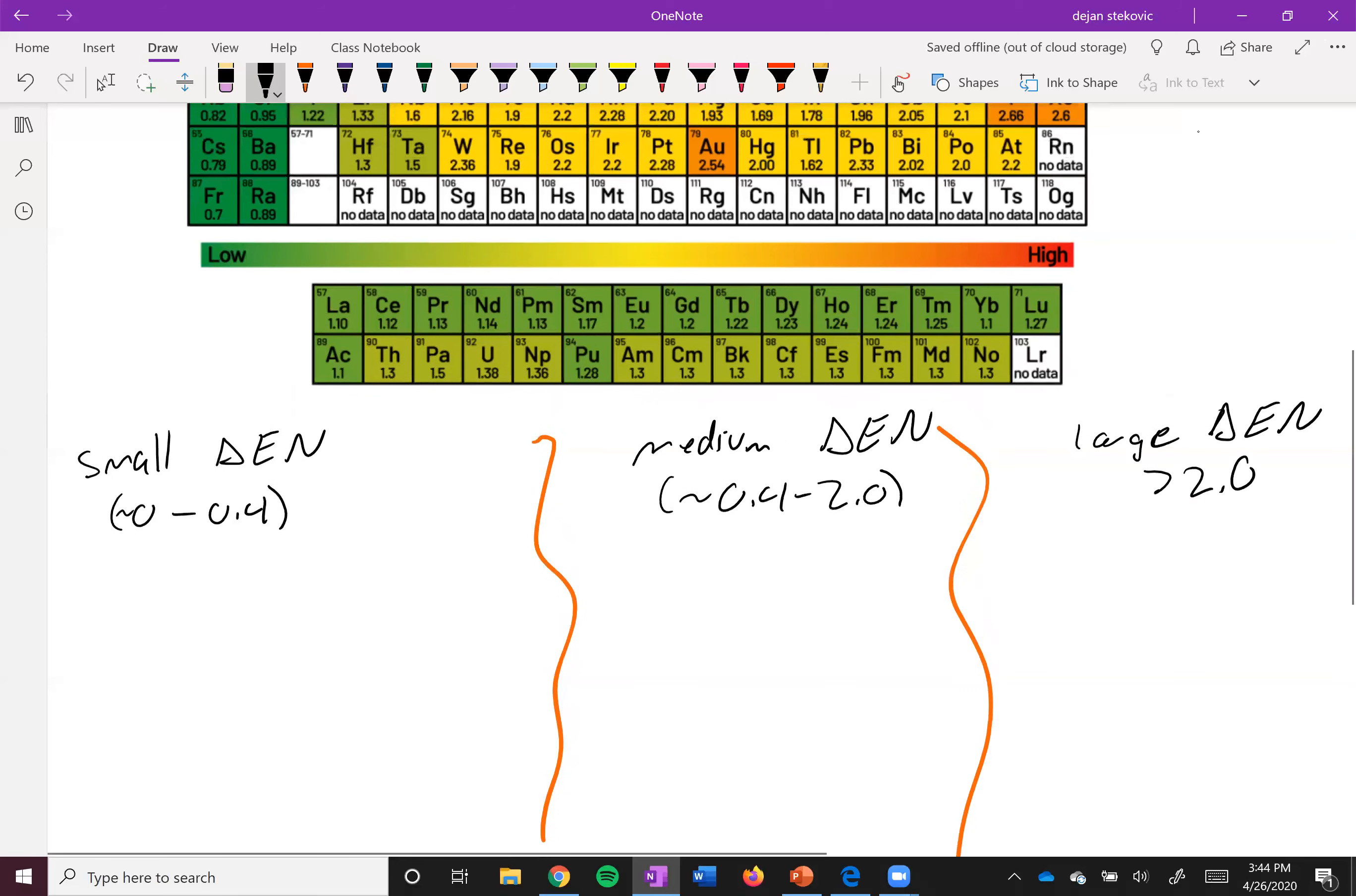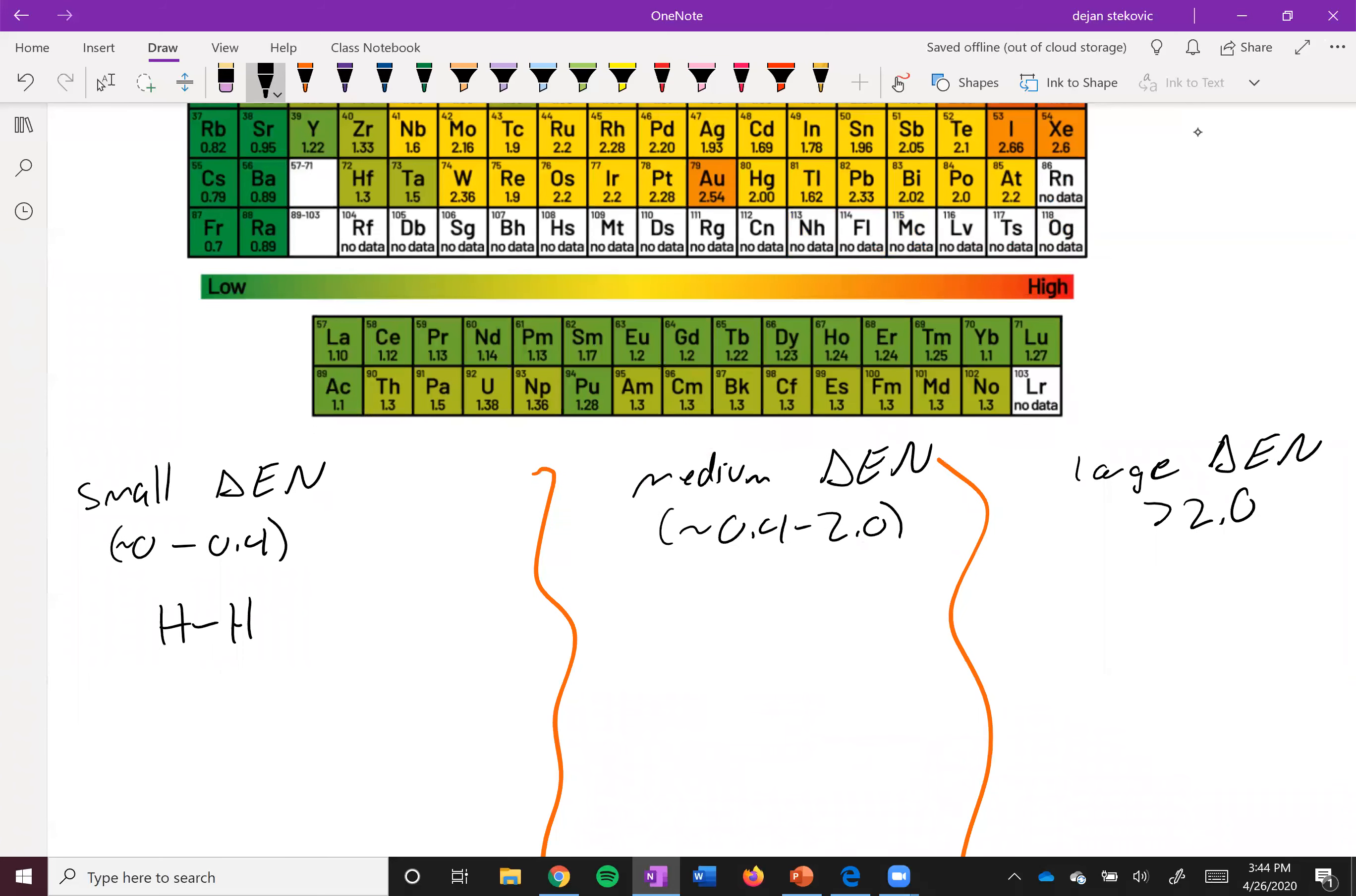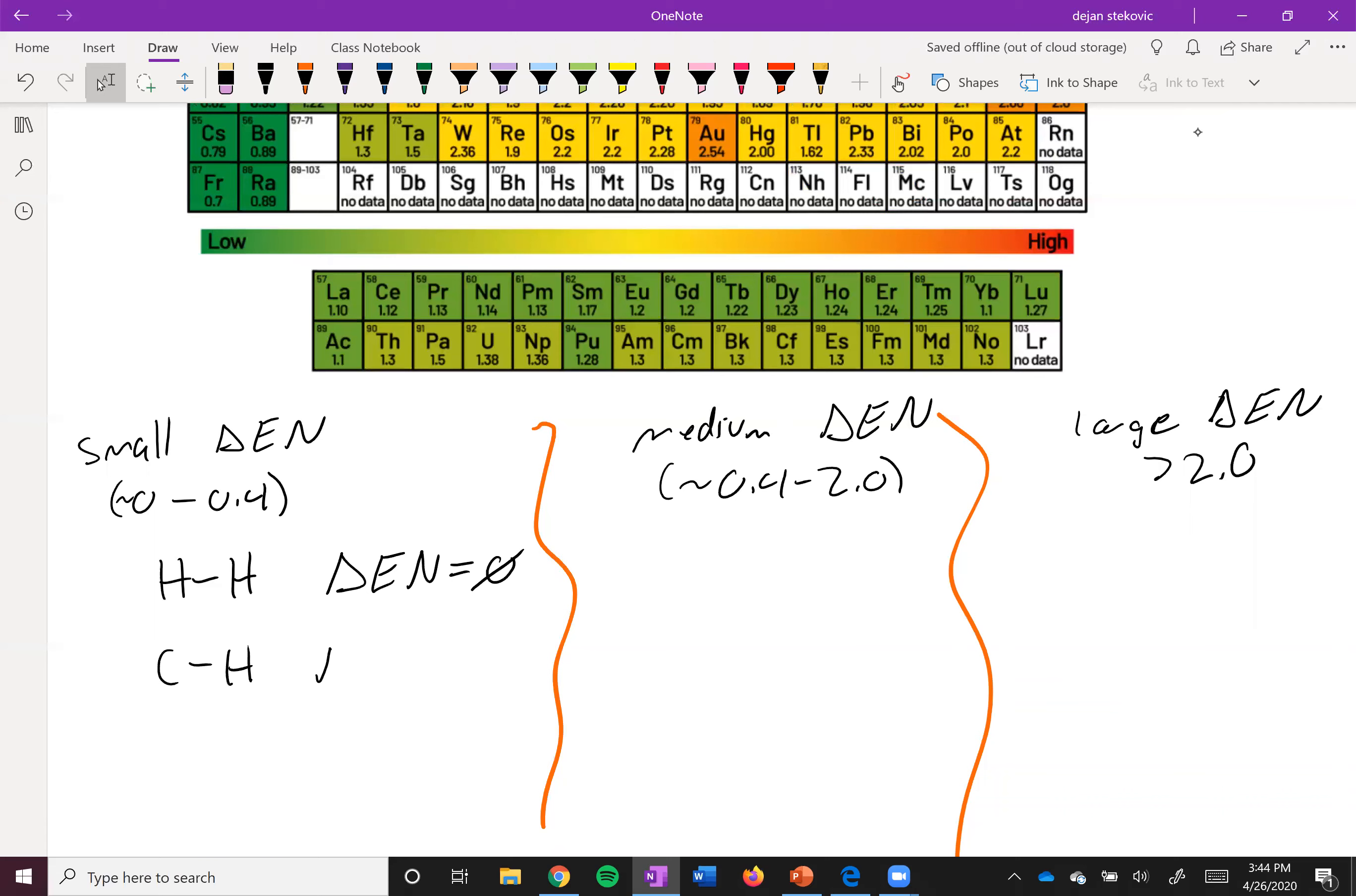So a small difference in electronegativity, that would be something like an atom bonded to itself. So something like an H-H bond, this delta EN would be 0 because it's the same thing. Another very popular example of a small difference in electronegativity is a CH bond. So if we find C and H here, H is 2.2. C is 2.55. So that's what, 0.35.